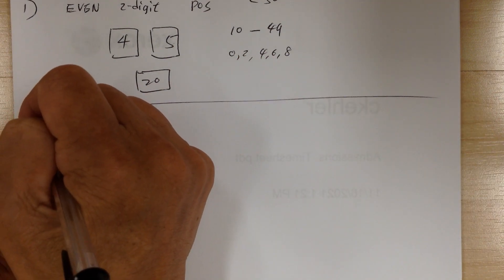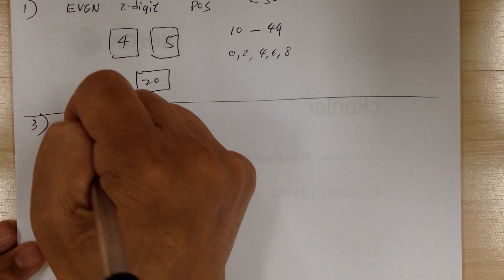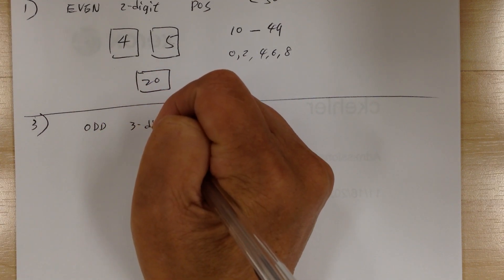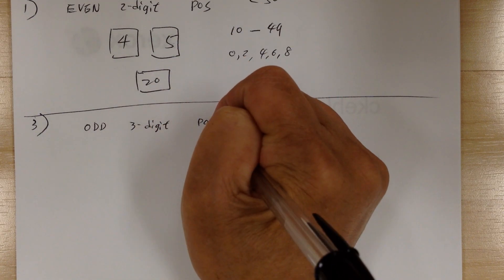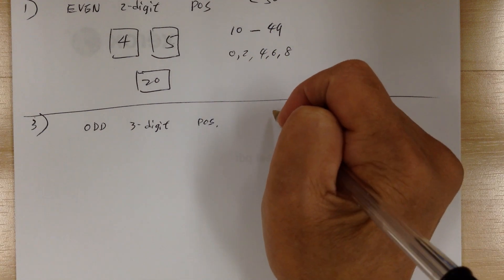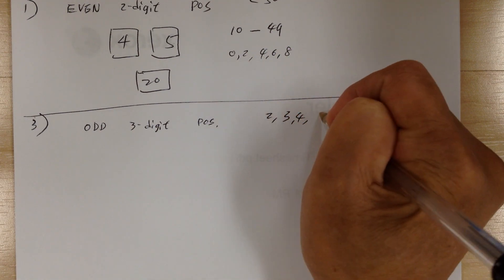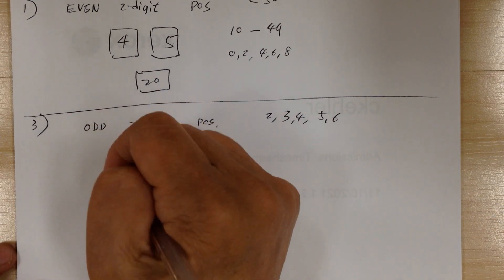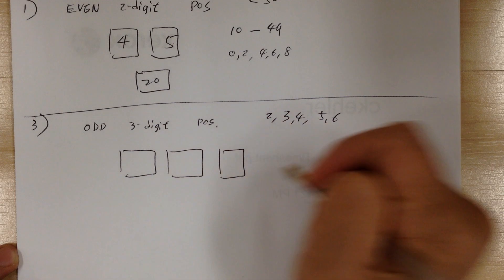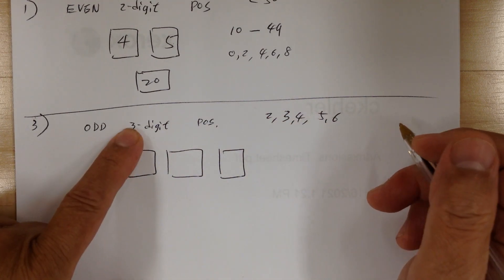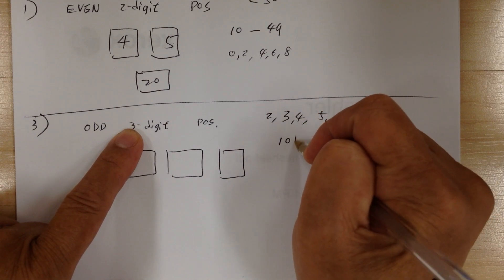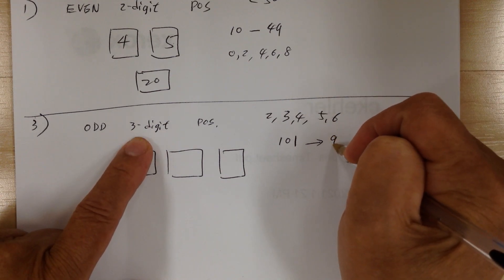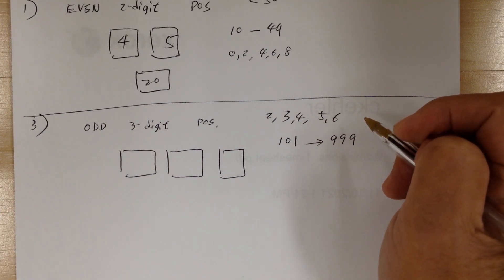Number three: how many three-digit odd positive numbers can be formed using the digits 2, 3, 4, 5, and 6? Write down all the information — odd, three-digit, positive. So you're going to get three boxes. The smallest three-digit number is 101 and the highest is 999.